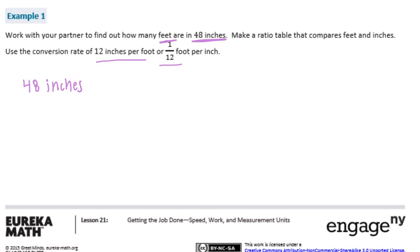So the conversion rate for that, we need to multiply it by the feet, the amount of feet that are in an inch. So we need to multiply that by 1 twelfth so that we can get how many feet that would be. Let's do 48 over 1 times 1 twelfth. And we'll get 48 twelfths. And then 48 divided by 12 is equal to 4. So there are 4 feet. 4 feet is equal to 48 inches.